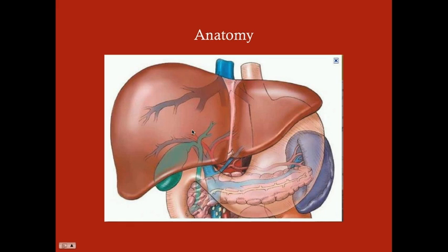The biliary tract drains bile into the duodenum. You have a left and right hepatic duct that come together to form the common hepatic duct. The common hepatic duct receives the cystic duct from the gallbladder, and together they form the common bile duct. The pancreatic duct also joins, forming the ampulla of Vater, which drains into the duodenum. The sphincter controlling that is the sphincter of Oddi.